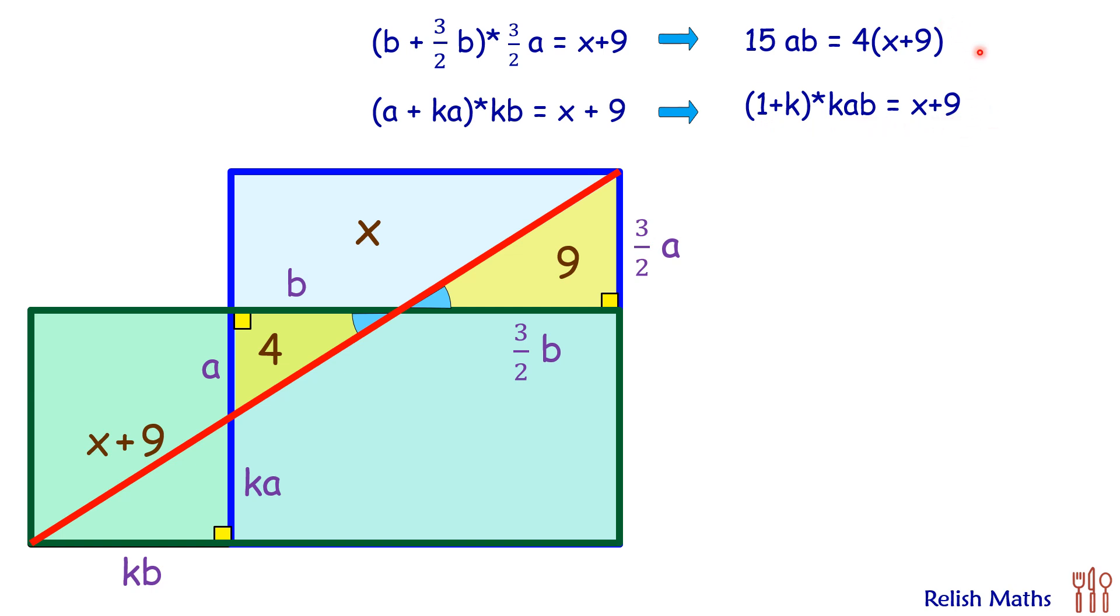Now if we compare these two equations, for RHS to be equal, we will multiply this equation by 4 and then compare the LHS. We will get 15 times ab equals 4 times (1 plus k) times k times ab. Now both sides ab is common, so ab will get cancelled. Simplifying it and opening the bracket, we will get a quadratic equation. When we solve the quadratic, we will get k₁ value will be negative which we'll ignore, and the other value we'll get as 3/2.